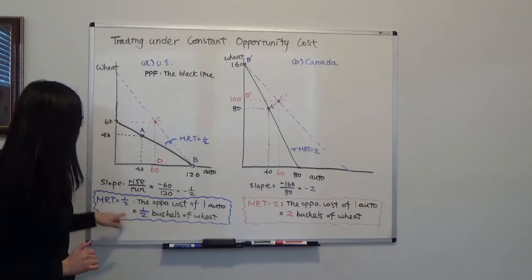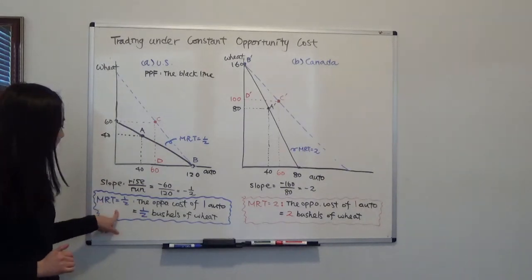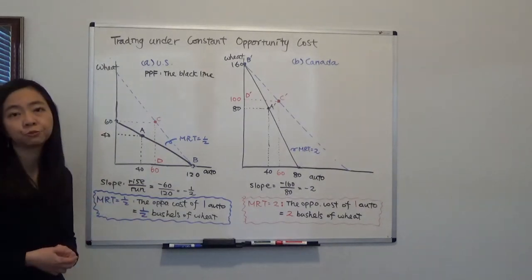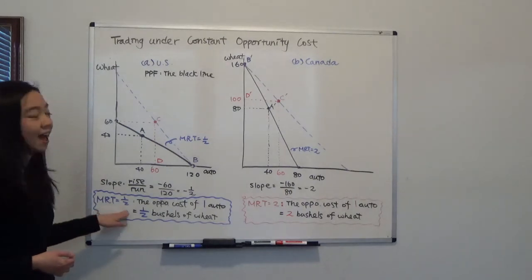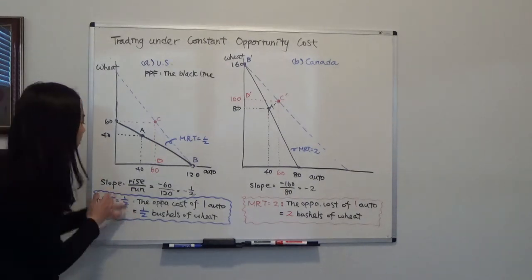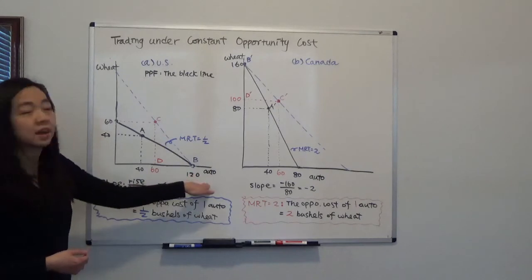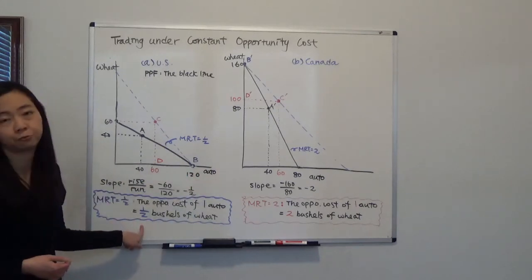Now we call that marginal rate of transformation, your MRT, is equal to the absolute value of your slope, so that's a half. That tells you the opportunity cost of producing one auto is a half bushel of wheat.